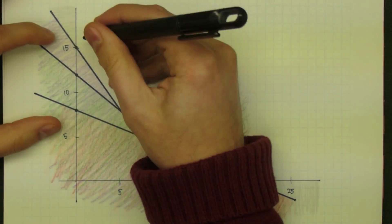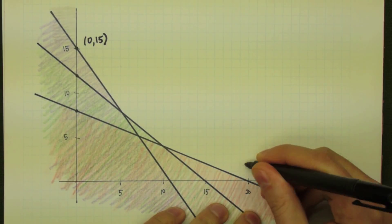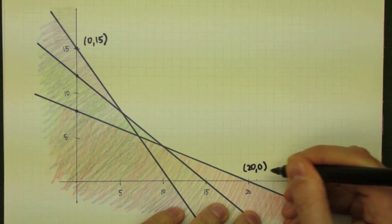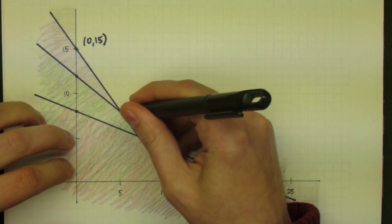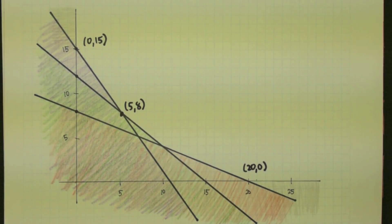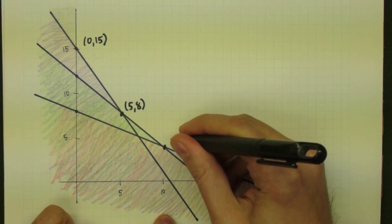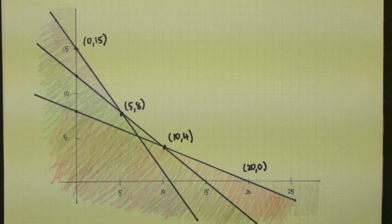For this particular problem, the vertices are given by intersecting the lines together. We're looking at the points (0, 15), (20, 0), and then the two vertices in the middle, found by intersecting the lines.